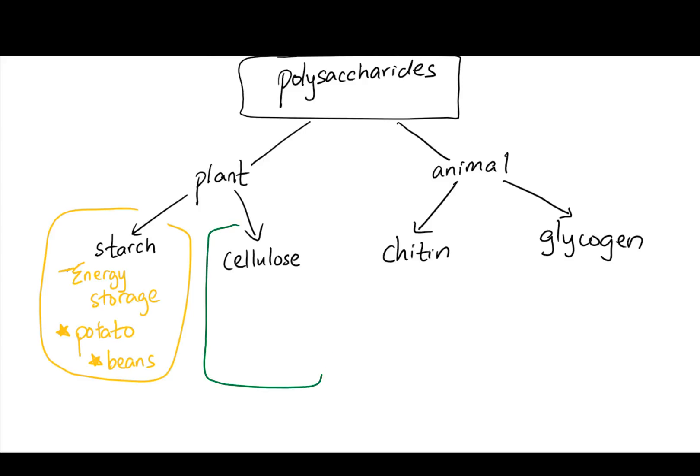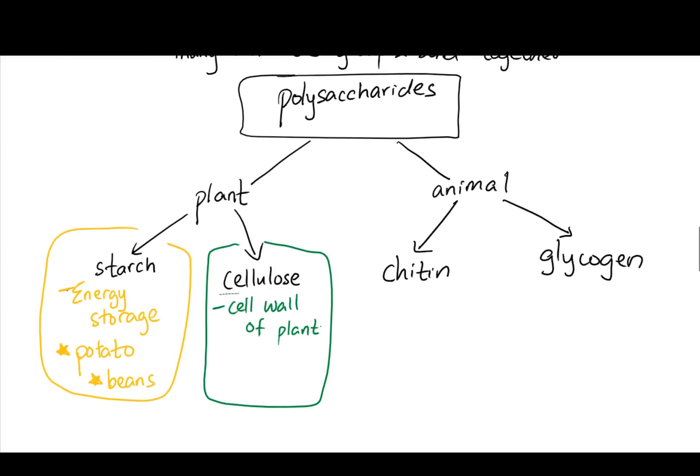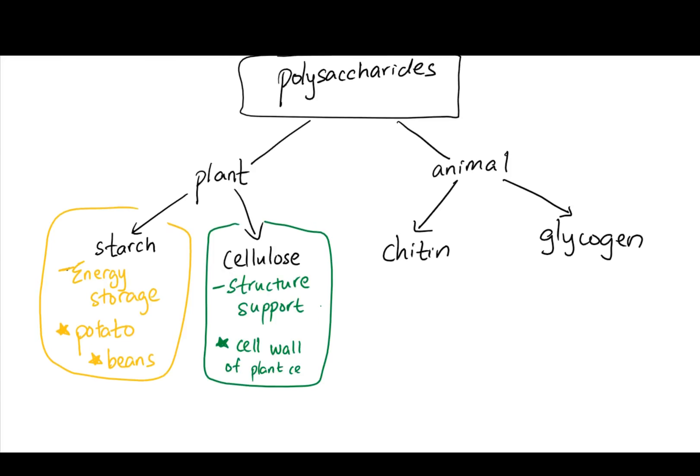The next one is cellulose. So cellulose is really the component of the cell wall of plant cells. So it is providing structural support.